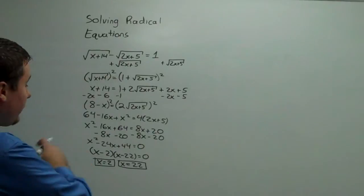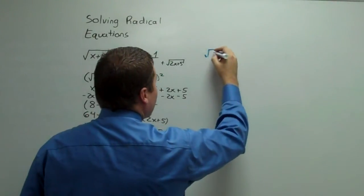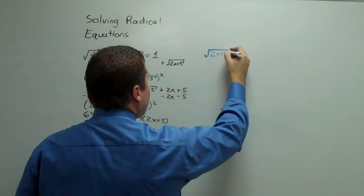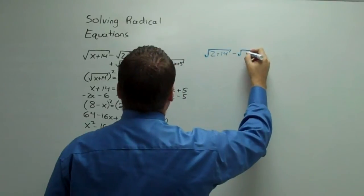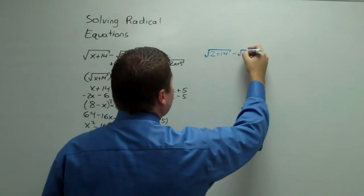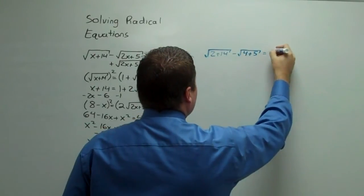So, will 2 pass the test? We have the square root of 2 plus 14, so that's 16, a perfect square, minus the square root of 2 times 2, which is 4, plus 5, equals 1.